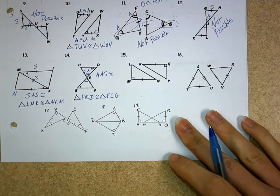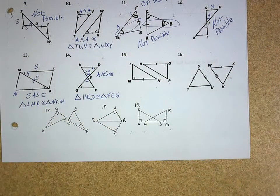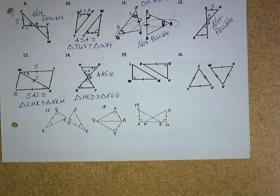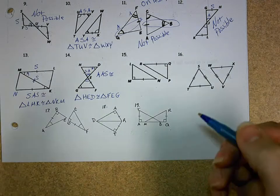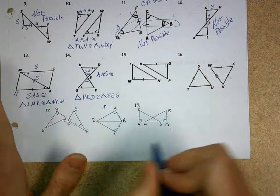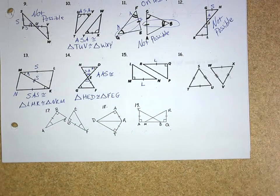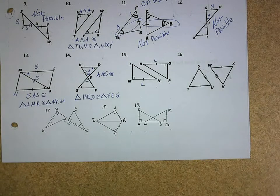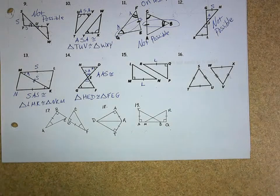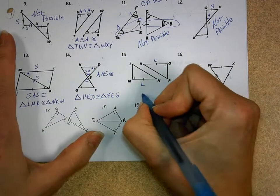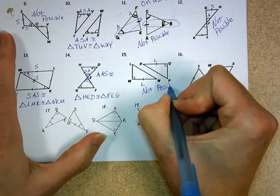All right, now let's look at number 15. On number 15, I have right triangles, and this is really good, because that means I can use hypotenuse leg. If I use the fact that they're both right triangles, I have a leg and a leg, but I need to have the hypotenuses congruent. Nothing else is congruent. I don't have enough information with this one, so this is not possible. Not enough info.